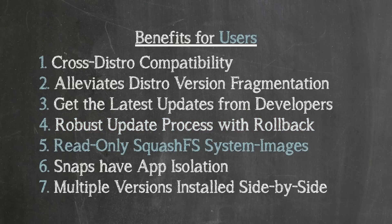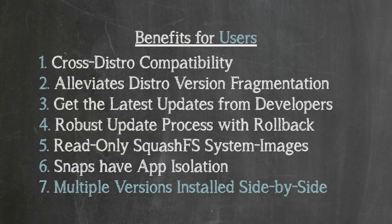Snaps are built as read-only SquashFS system images that are mounted as loop devices upon boot. This structure improves both security and load times for launching applications. The SquashFS approach allows for snaps to have app isolation, meaning snaps are not immediately allowed to touch the data from another snap or your home folder. In contrast, debs install as root so they can do anything to your system and see all the data in your home folder. Snaps also allow for multiple versions of the same application to be installed side by side.